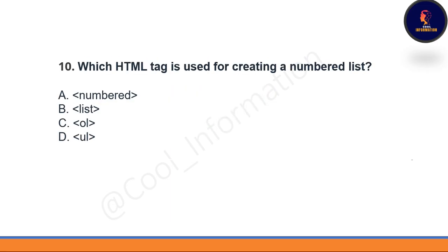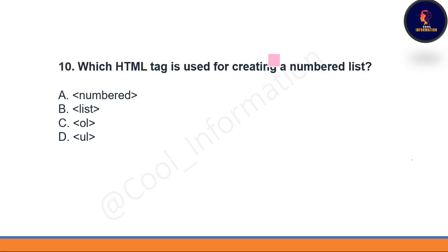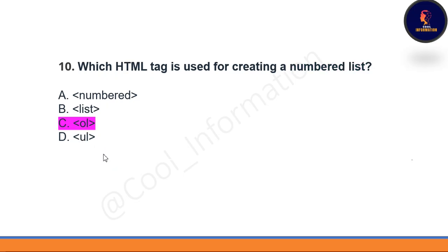Next question: which HTML tag is used for creating a numbered list? The question is about a numbered list. The correct option is option C — the 'ol' tag, which stands for ordered list or numbered list.